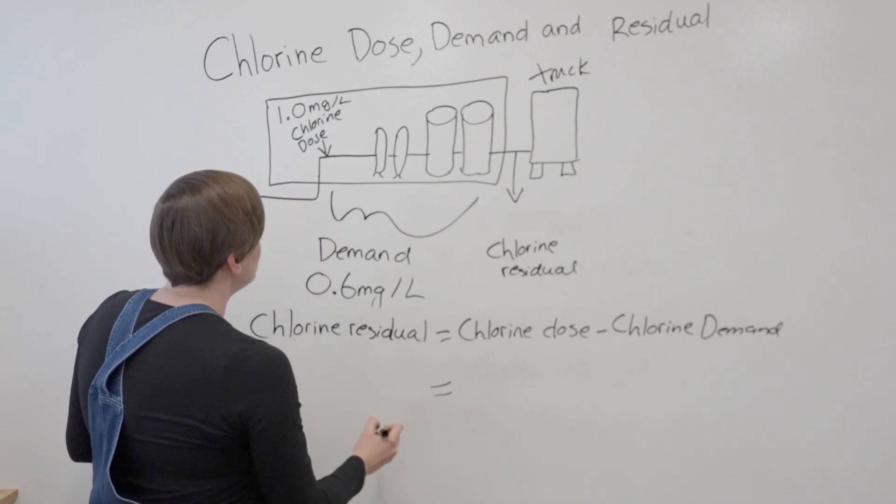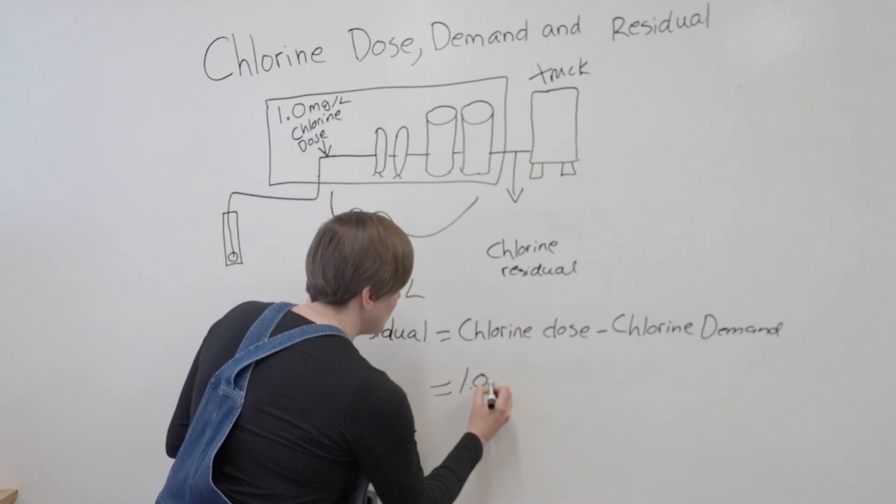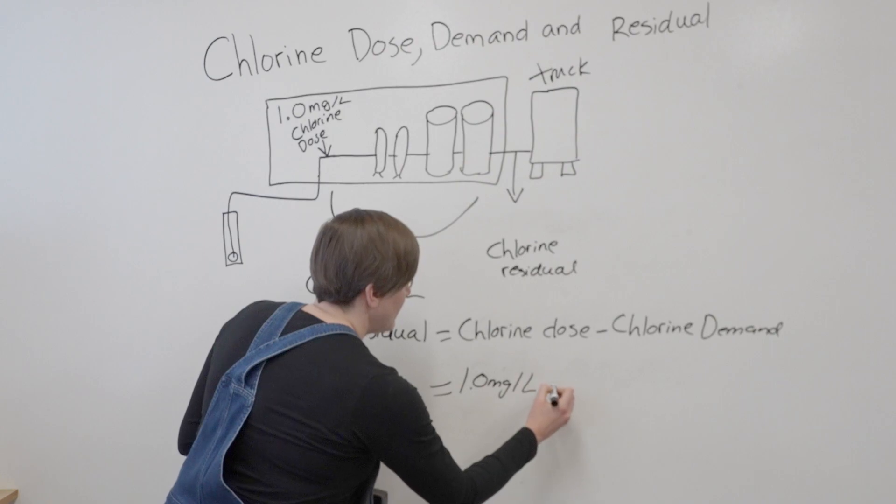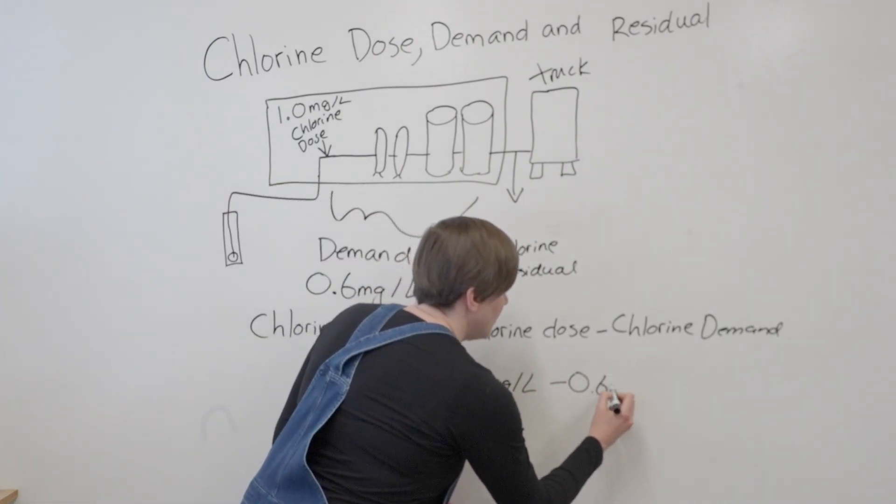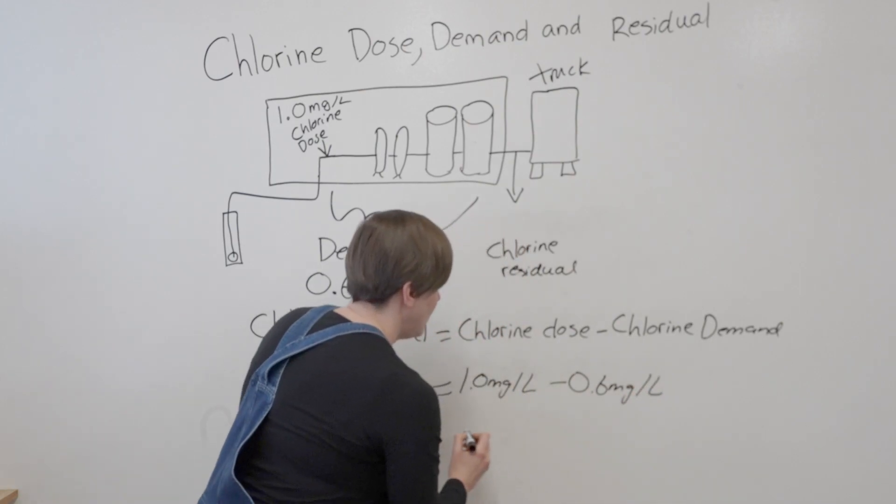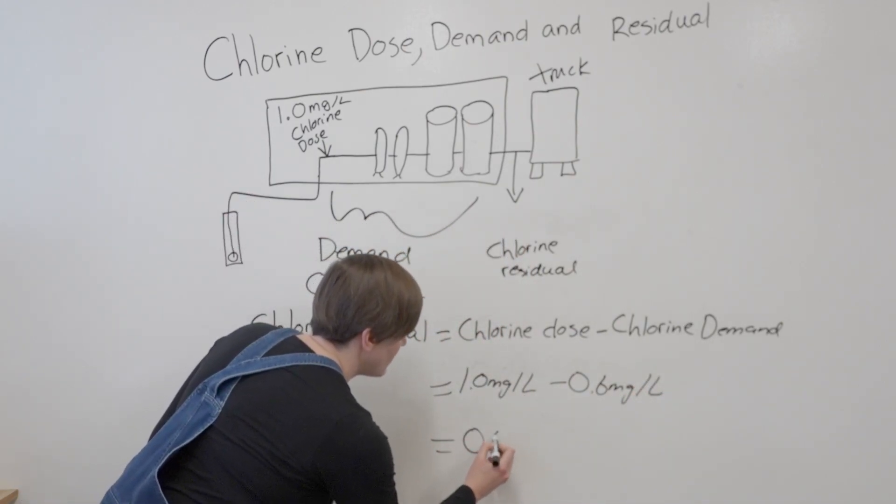And it's going to be chlorine dose minus chlorine demand. So in my simple example, my dose is 1.0 milligrams per liter, my demand is 0.6 milligrams per liter, and 1 minus 0.6 is 0.4 milligrams per liter.